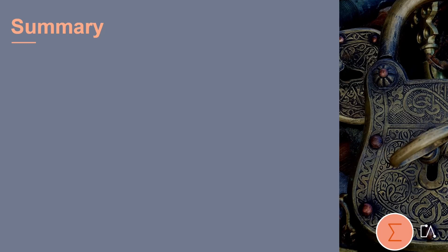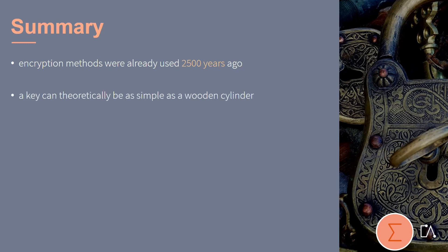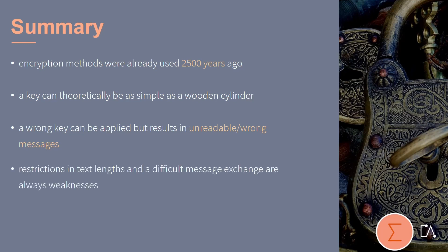We learned the following points in this chapter. Encryption methods were already used 2,500 years ago. A key can theoretically be as simple as a wooden cylinder. A wrong key can still be applied, but it usually results in unreadable or wrong messages. Restrictions in text lengths and a difficult message exchange can always be considered weaknesses of a method.